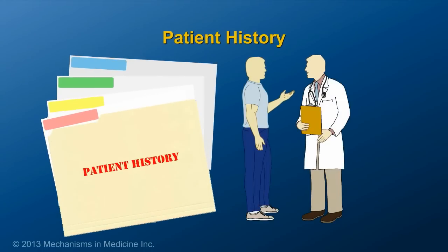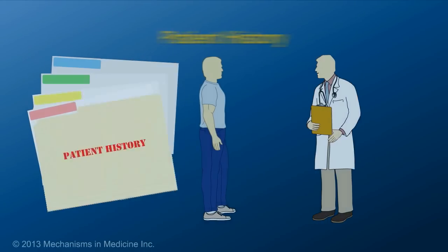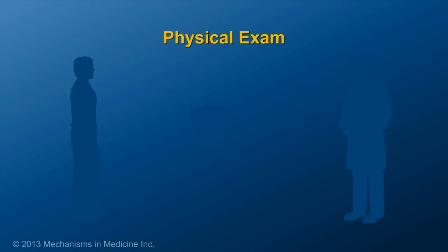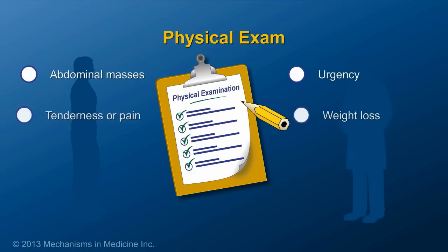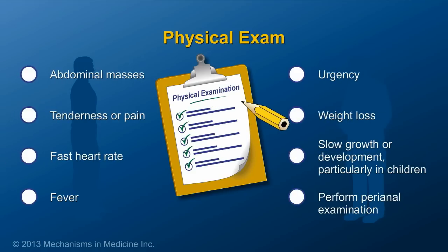First, the physician takes a thorough patient history. Next, a physical exam is performed to look for abdominal masses, tenderness or pain, a fast heart rate, fever, urgency, or weight loss. Slow growth or development, particularly in children, may also be present.